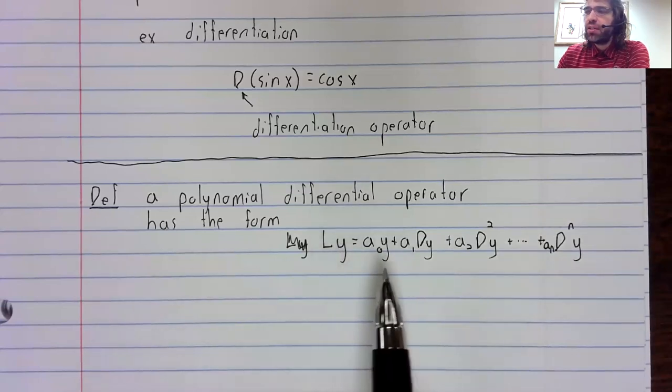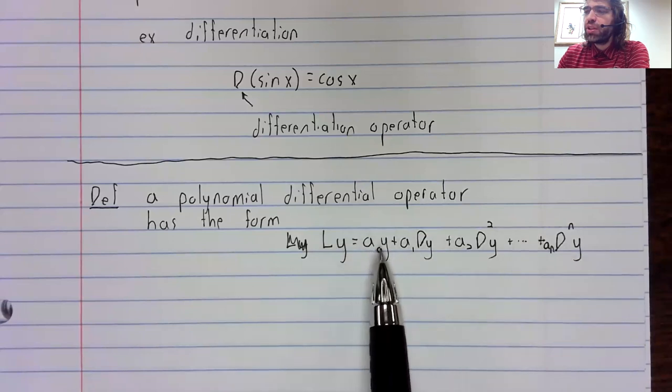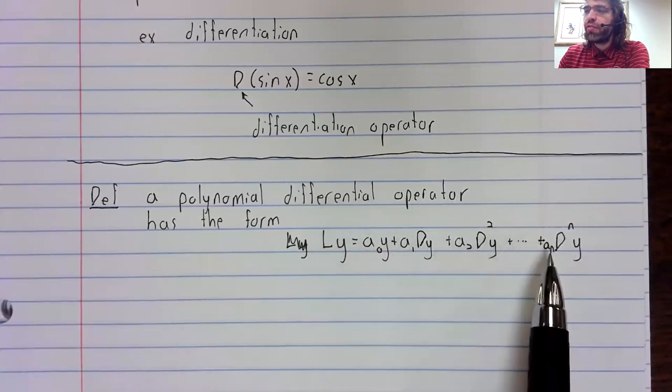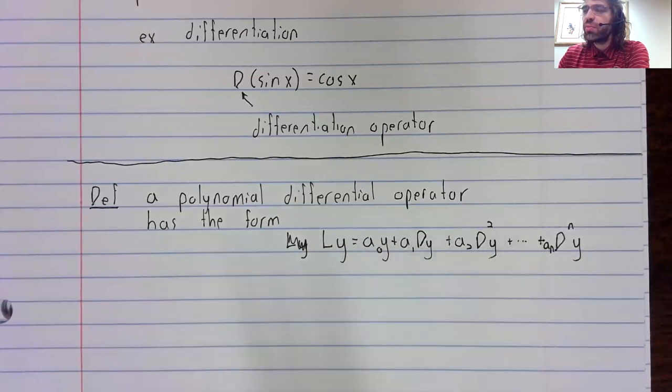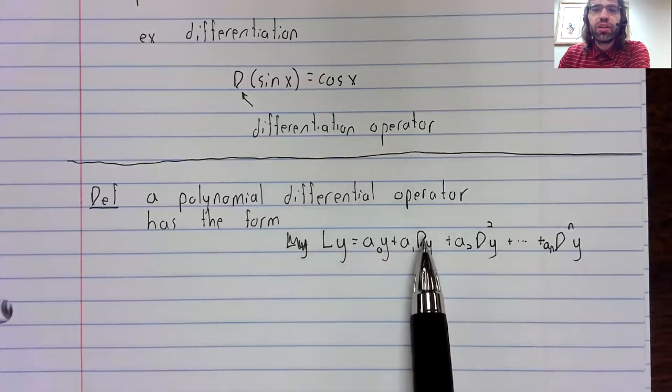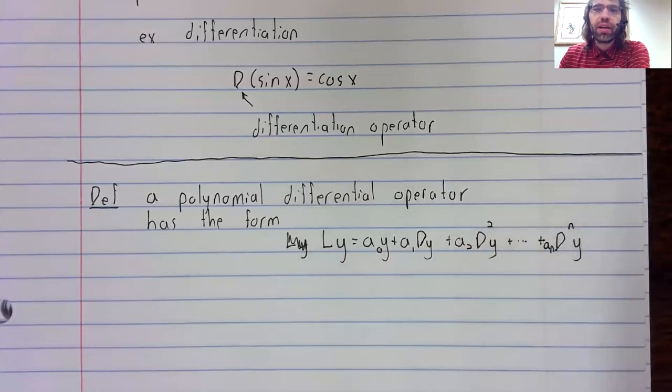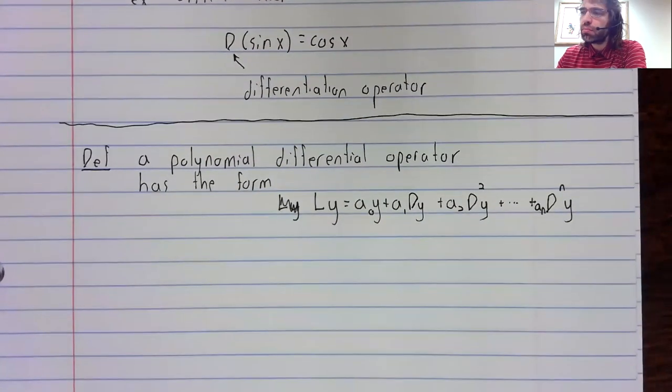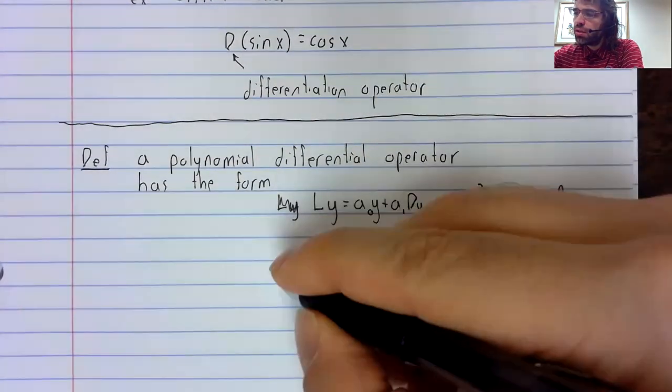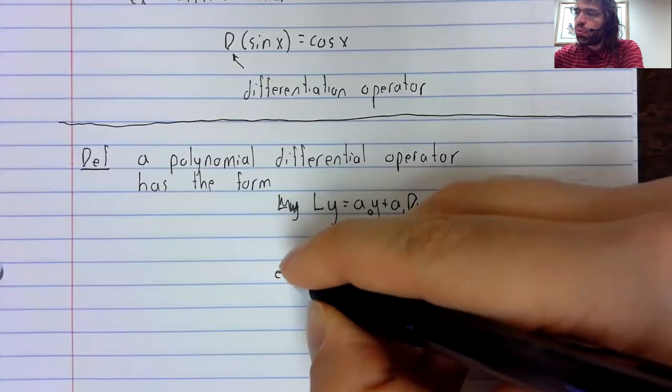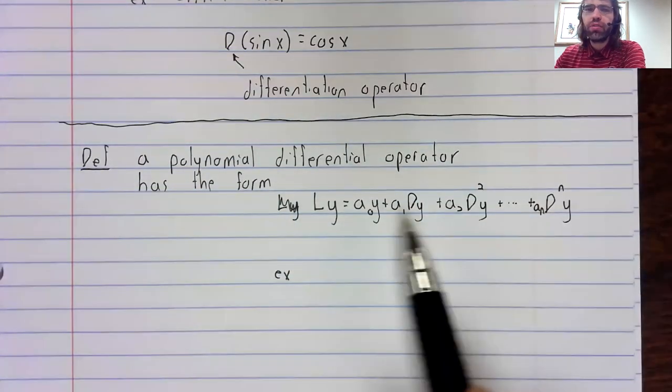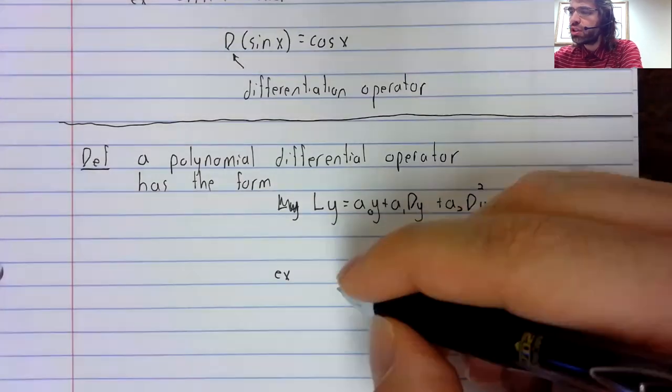And in this definition, these A's are fixed constants. This D is differentiation. This D squared represents the second derivative, and so on. An example will clarify this definition.